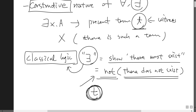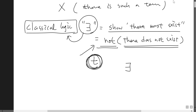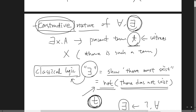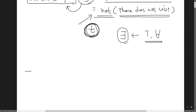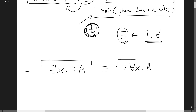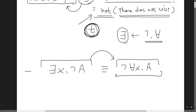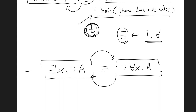It turns out that in classical logic, existential quantification can be derived by composing negation and universal quantification. To better understand the constructive nature of existential quantification, let's consider the equivalence between two propositions. The question is: are 'exists x, not A' and 'not for all x, A' logically equivalent — meaning each implies the other?